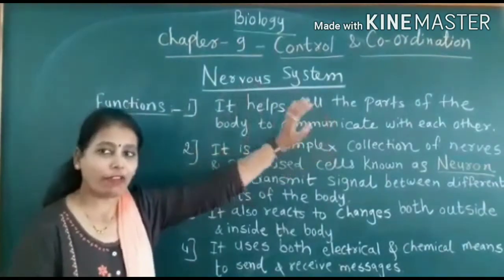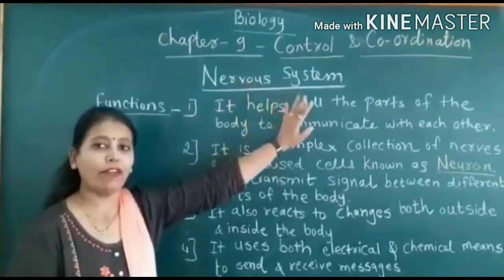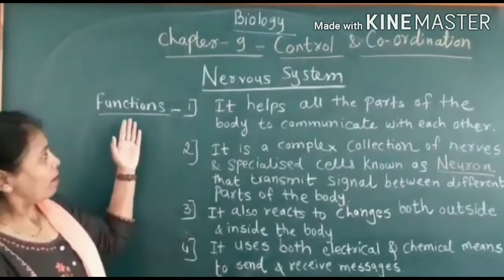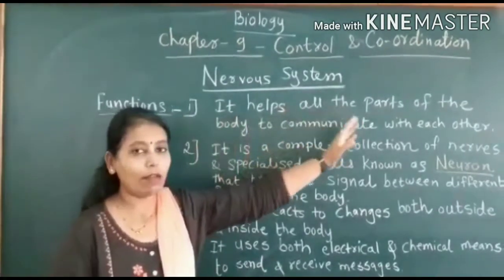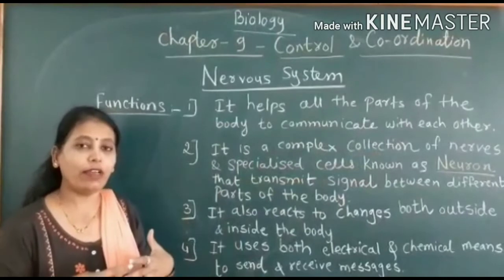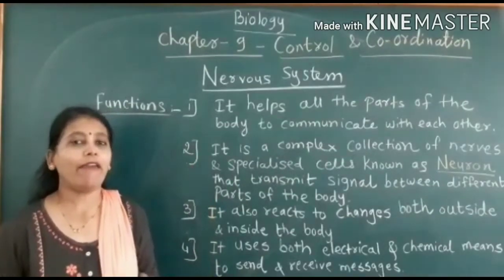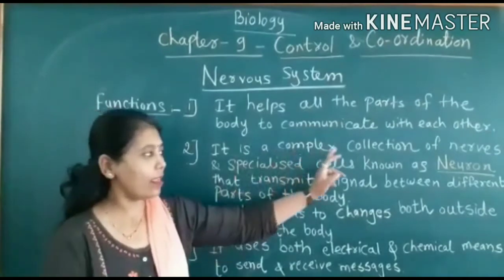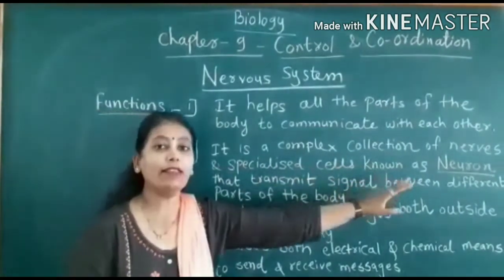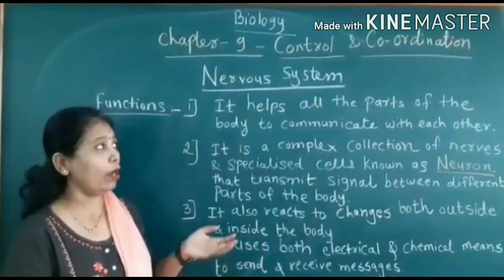Let us study what is the function of the nervous system. As we studied in the last video, the structural and functional unit of the nervous system is called a neuron, which is also called a nerve cell. It is a complex collection of nerves and specialized cells known as neurons, which form the basic structural and functional unit of the nervous system.